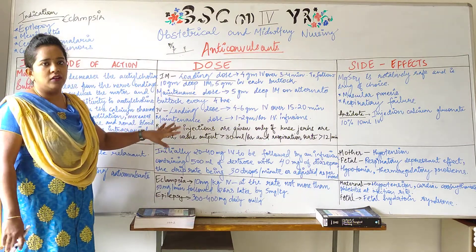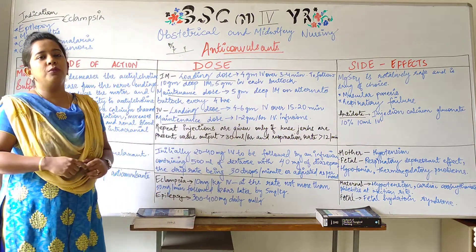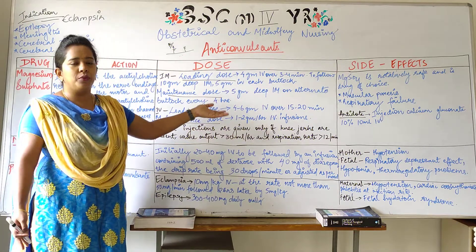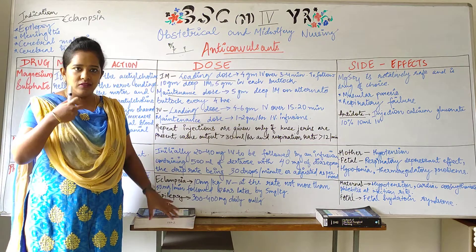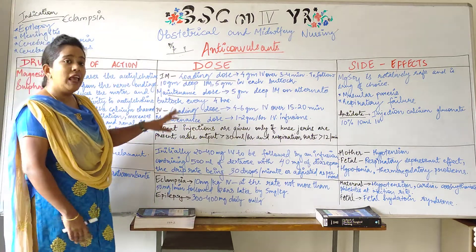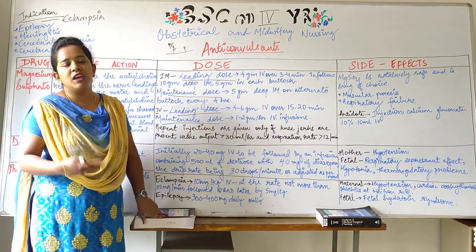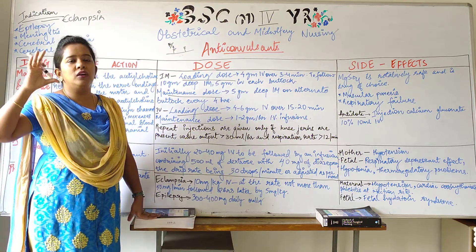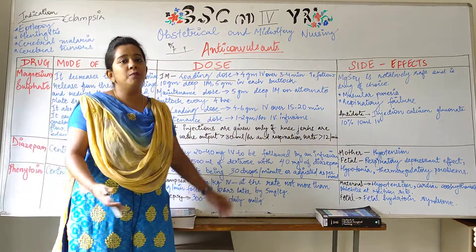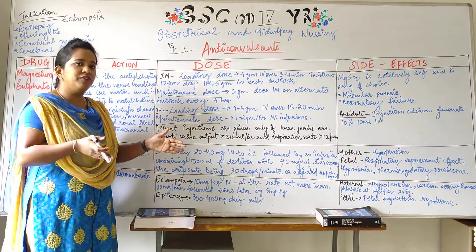For the IV route of administration, the loading dose is 4–6 grams IV given slowly over 15–20 minutes. For the maintenance dose, you give an IV infusion of 1–2 grams per hour — dilute magnesium sulphate into a bottle of hydrating solution and administer at that rate.